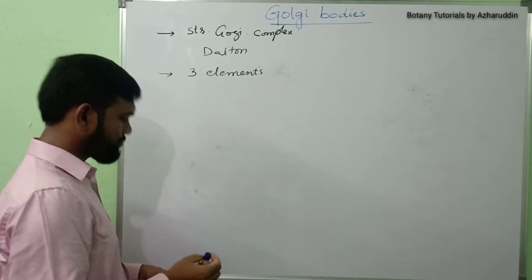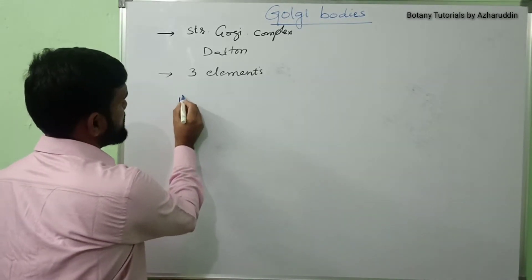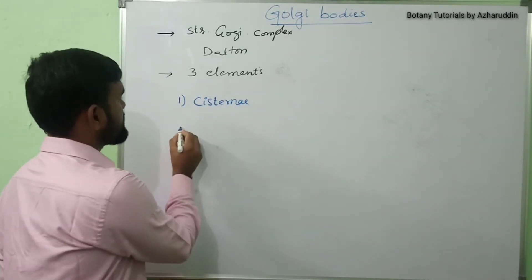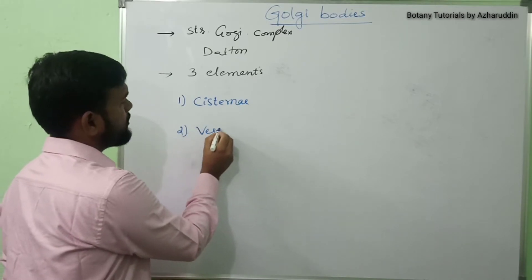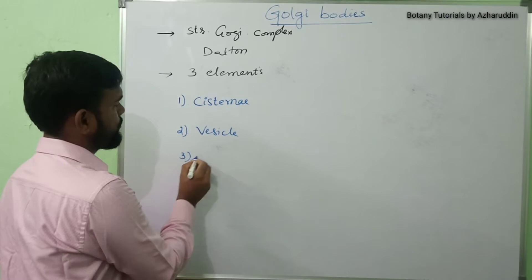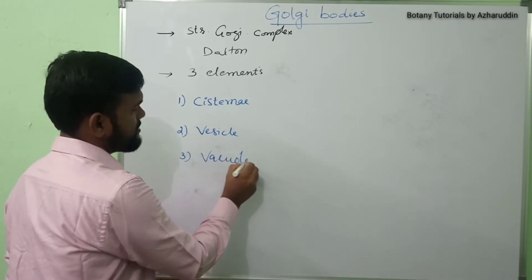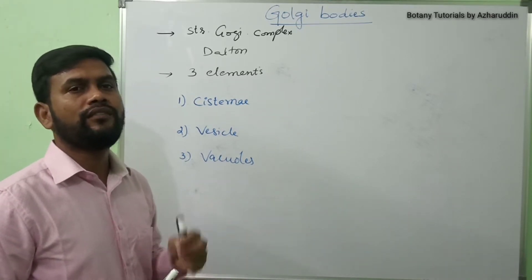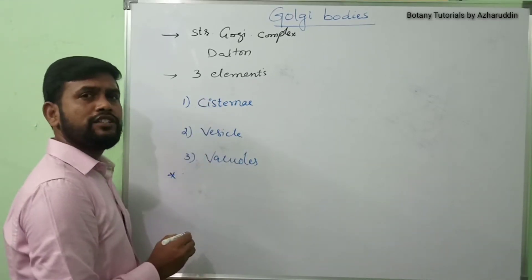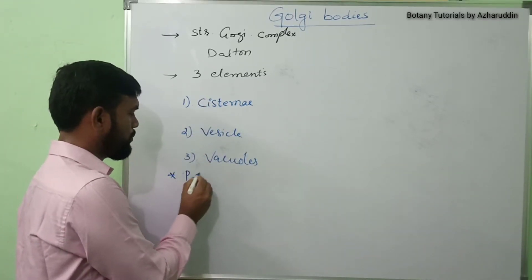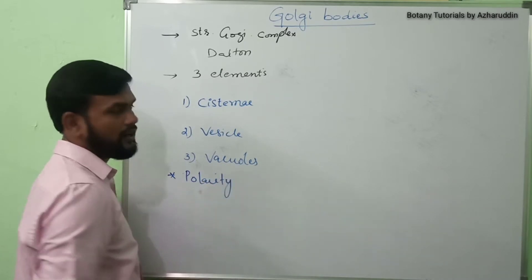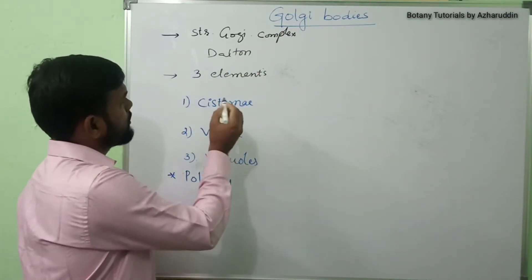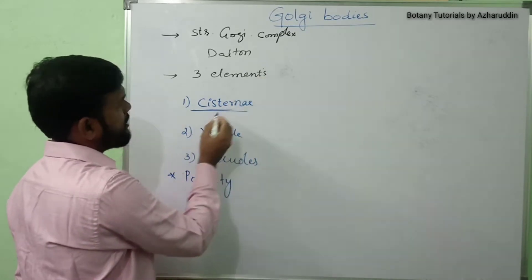The three elements observed by Dalton are: number one, cisternae; second, vesicles; and third, vacuoles. These three elements were observed by Dalton when he examined the Golgi body under the electron microscope. The Golgi body also shows polarity, which can be understood after drawing the diagram of the Golgi complex.